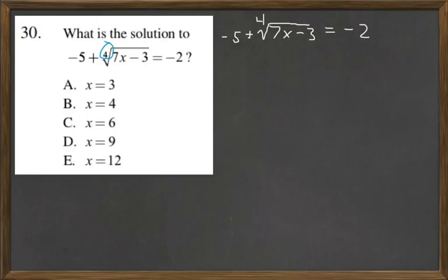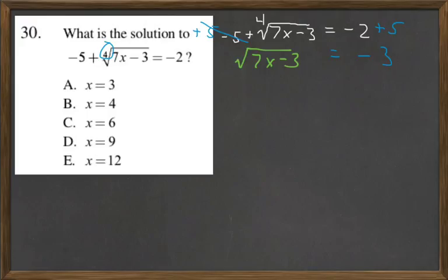Let's get rid of the negative 5 on the left-hand side of the equation first. So let's add 5 here — that gets rid of this — and add 5 over here. That gives us negative 3 on the right side, and on the left you still have the 4th root of 7x minus 3.